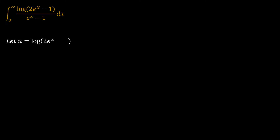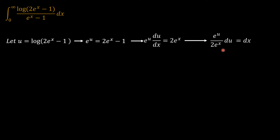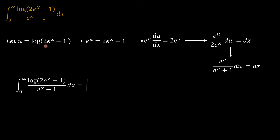The first thing we do is let u equal the natural logarithm of 2e^x minus 1, so e^u equals 2e^x minus 1, and therefore e^u du/dx equals 2e^x. This gives dx equals e^u over 2e^x du, and since 2e^x equals e^u plus 1, we get dx equals e^u over (e^u plus 1) du. When x equals 0, u equals ln(1) equals 0, and when x tends to infinity, u tends to infinity — so the limits are unchanged.